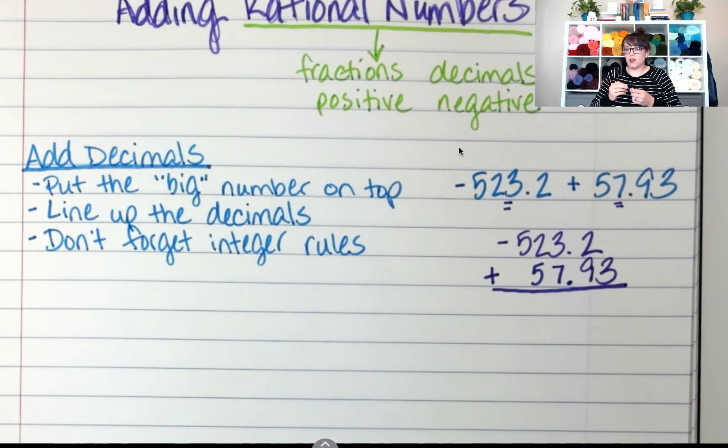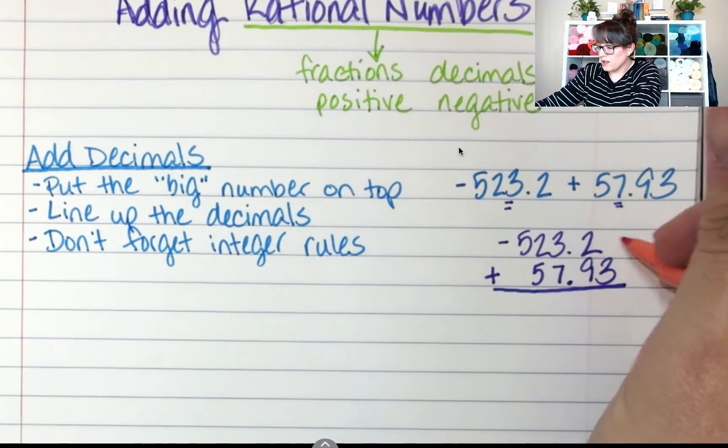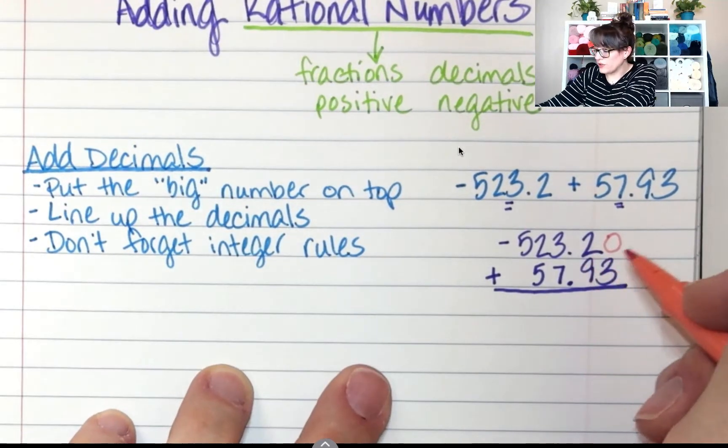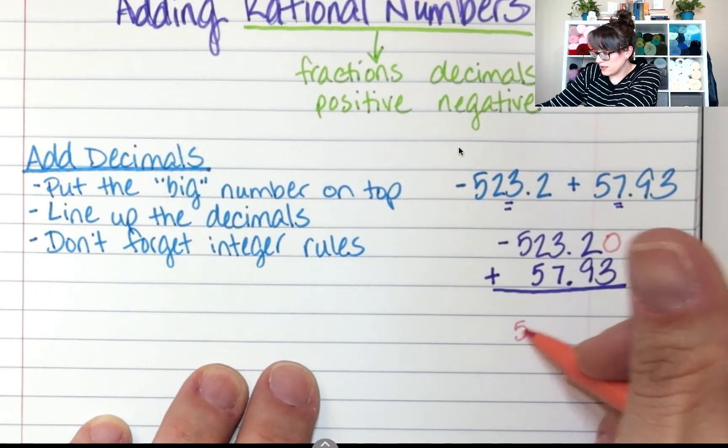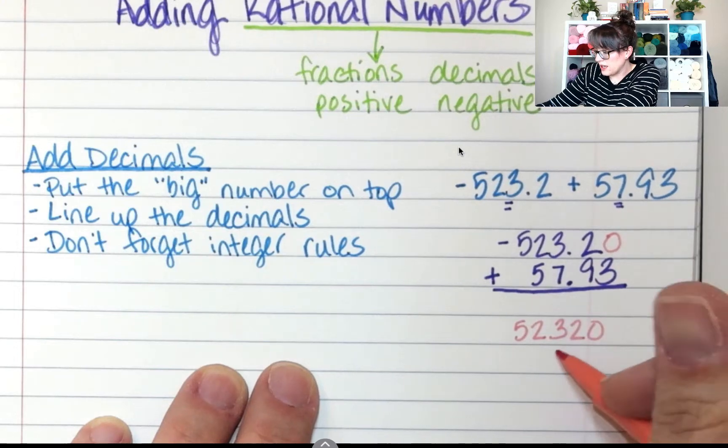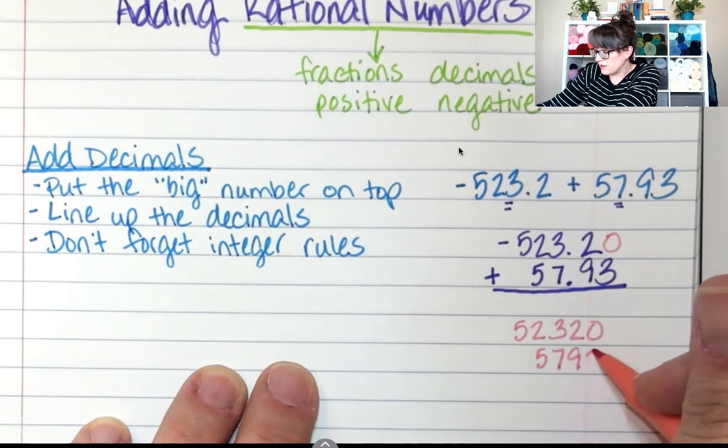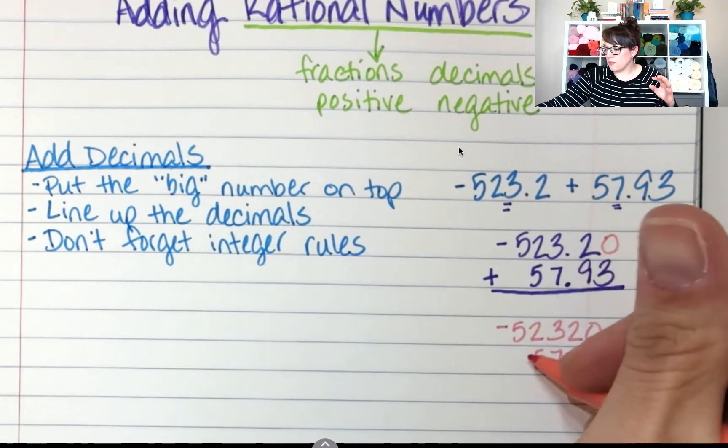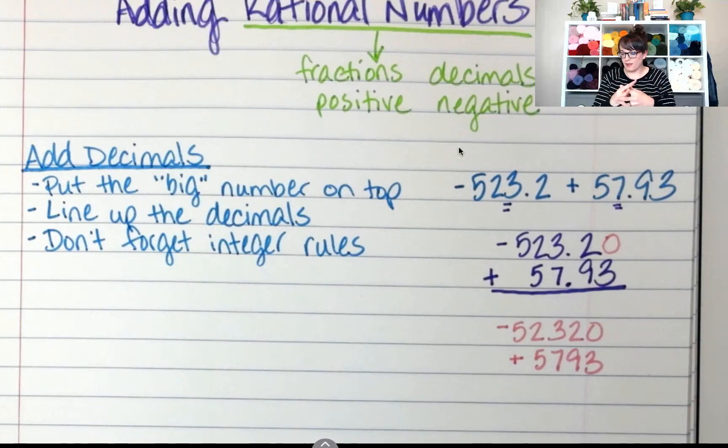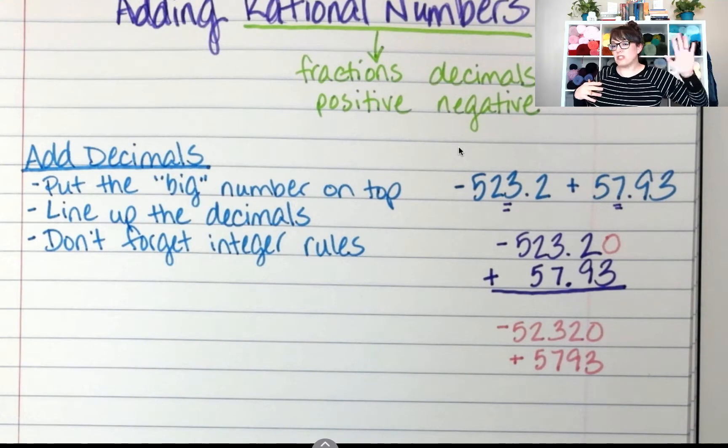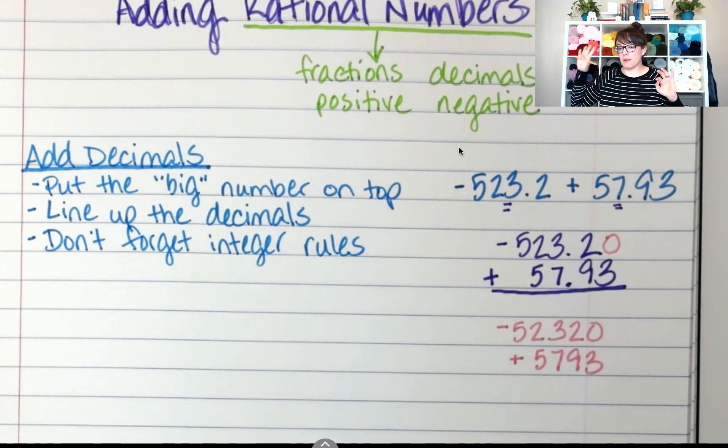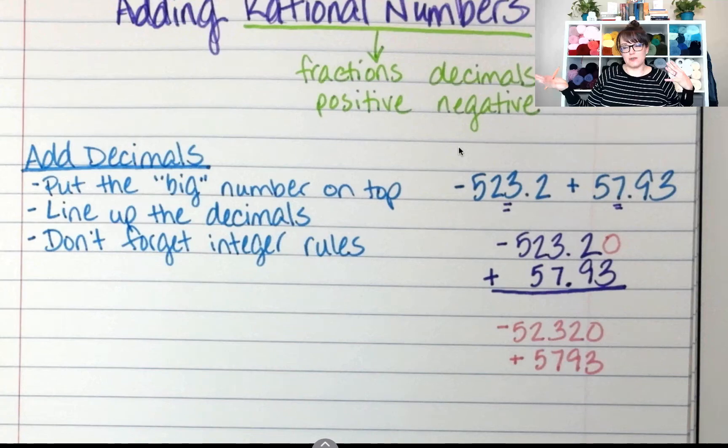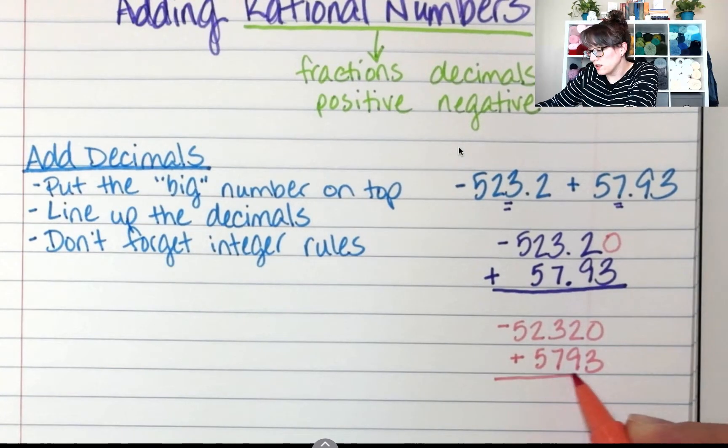Now we're going to follow our integer rules. For this, we're going to kind of pretend that the decimal is not even there. So we're going to put an imaginary 0 right there. And we're going to work this problem out like this is 52,320. And then 5,793. If we had those two numbers, one of them is negative, one of them is positive. And we're going to put them together in the same container. If I have 52,000 negatives and 5,000 positives, which group is bigger? The negatives or the positives? The negative group is much bigger. So my answer is going to be negative.